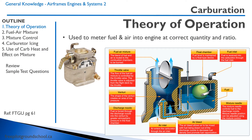The carburetor is used to meter the fuel and air into the engine at the correct quantity and ratio. Looking at the schematic on the right, we start off with a fuel inlet where fuel comes from the fuel tank. Then inside the carburetor is a float chamber and a float which meters the fuel coming into the carburetor so that there's always a correct amount of fuel inside the float chamber.